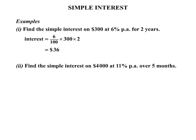Example 2. We're asked to find the simple interest on $4,000 at 11% per annum over 5 months. Again we start with interest equals. Now 11% is 11 over 100, we multiply by the 4,000.